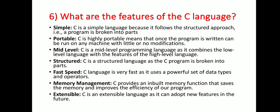Next question: what are the features of C language? It is simple, portable, mid-level, structured, fast speed, good memory management, and extensible. It is simple because C follows the structured approach — the program is broken into parts. It is portable: C is highly portable, meaning a program written in C can be run on any machine with little or no modification.